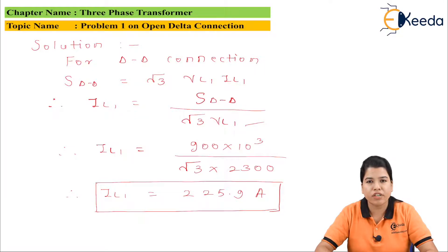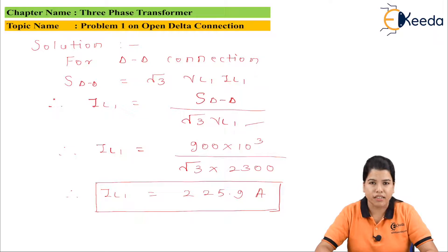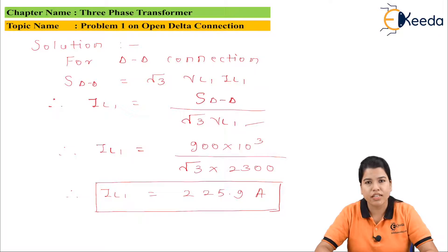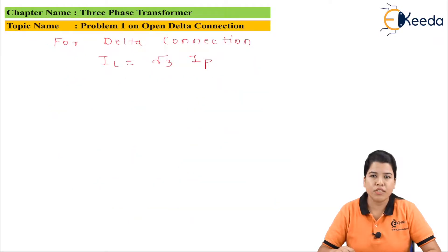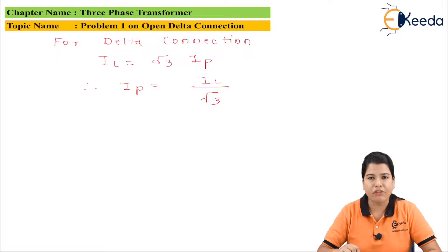Now let us find the current at the HV and LV sides. The value we found, 225.9 A, is the line current; we need to convert it to phase current. In a delta connection, the relationship between line current and phase current is IL = √3 · Iphase, so rearranging: Iphase = IL / √3.